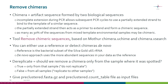There can be as many as 30 percent of sequences from mixed template environmental samples which are chimeric. The tool in Chipster is called 'remove chimeric sequences' and is based on the Mothur commands chimera.uchime and chimera.vsearch.